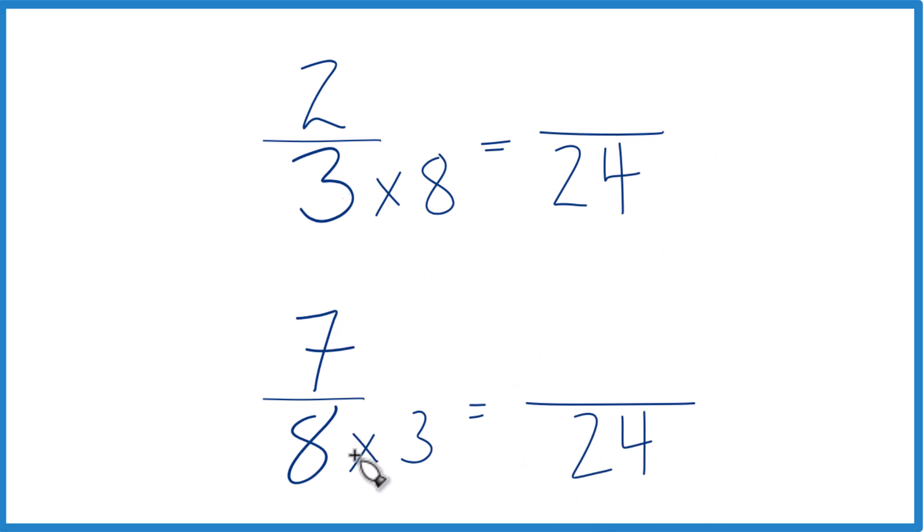But I can't just multiply the denominator by three. I need to multiply the numerator by three as well. Three over three is just one—I don't change the value, just the way it's written. Seven times three is 21, and seven-eighths and 21/24 are the same number, the same value, just written differently.